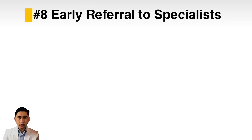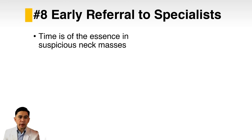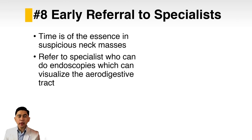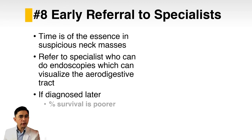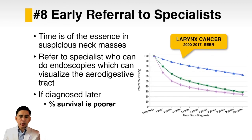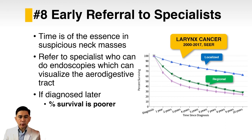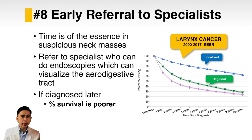Eighth, early referral to a specialist. Time is of the essence when dealing with suspicious neck masses. Refer to a specialist who can perform endoscopies to visualize the aerodigestive tract. If malignant neck masses are diagnosed late, patient survival is poorer. For example, in laryngeal cancer, patients diagnosed early in a localized state have double the chances of survival compared to those diagnosed late with regional disease. As physicians, we should avoid delays in diagnosis of suspected neck masses to improve patient survival.